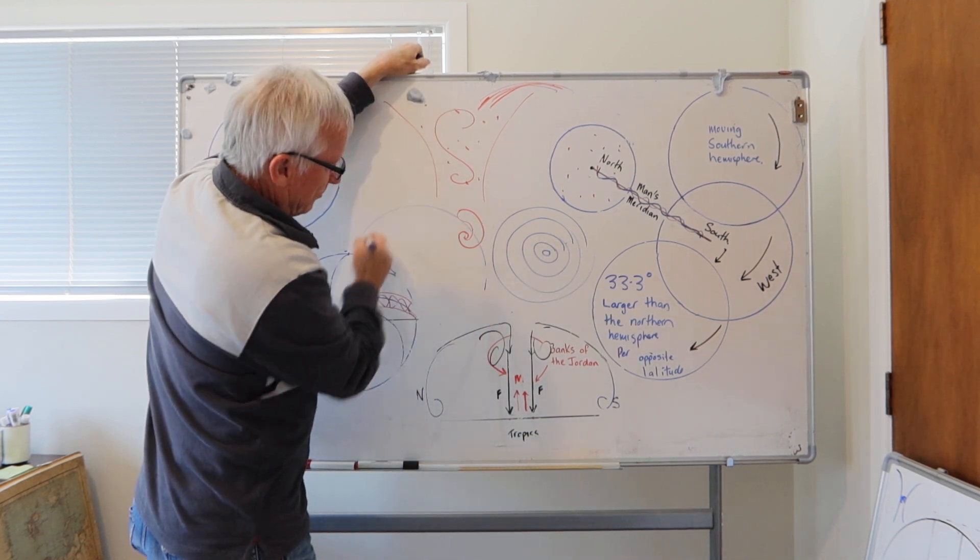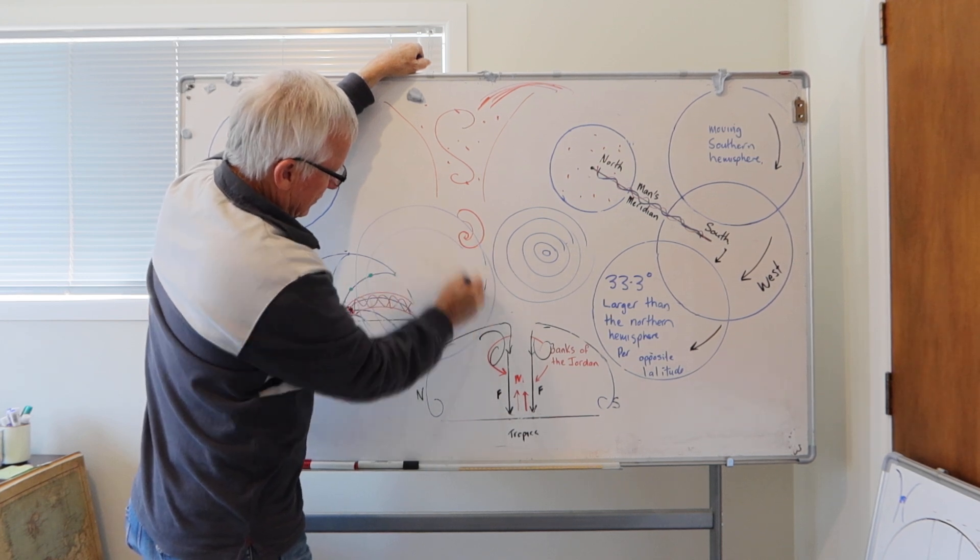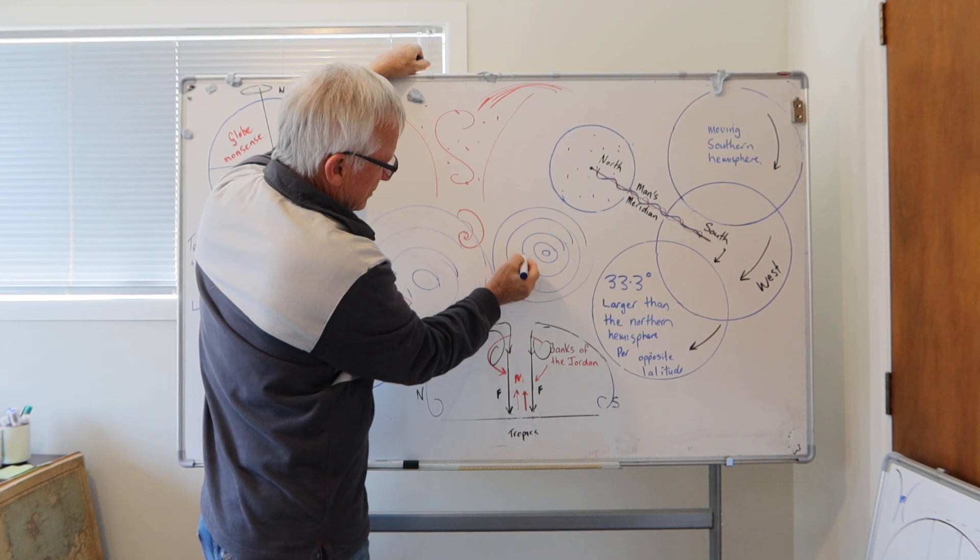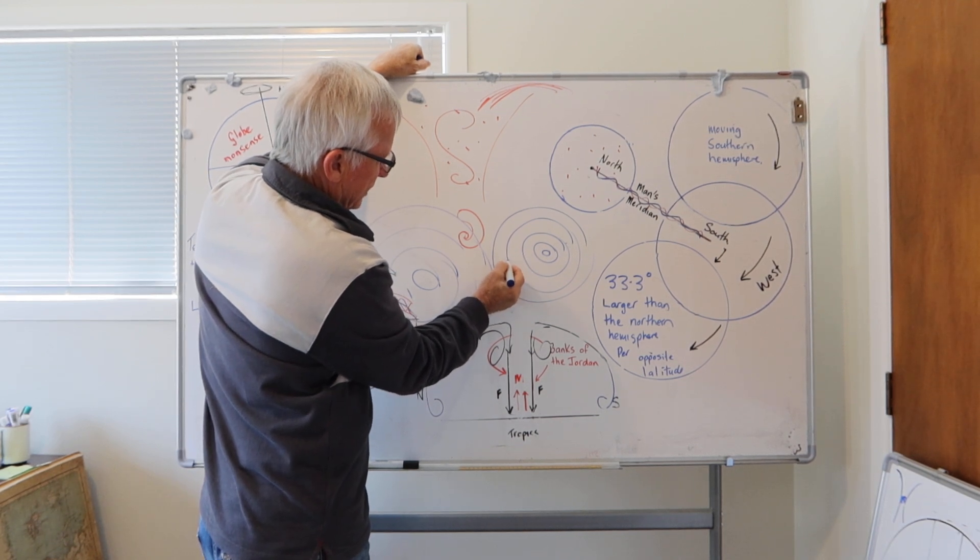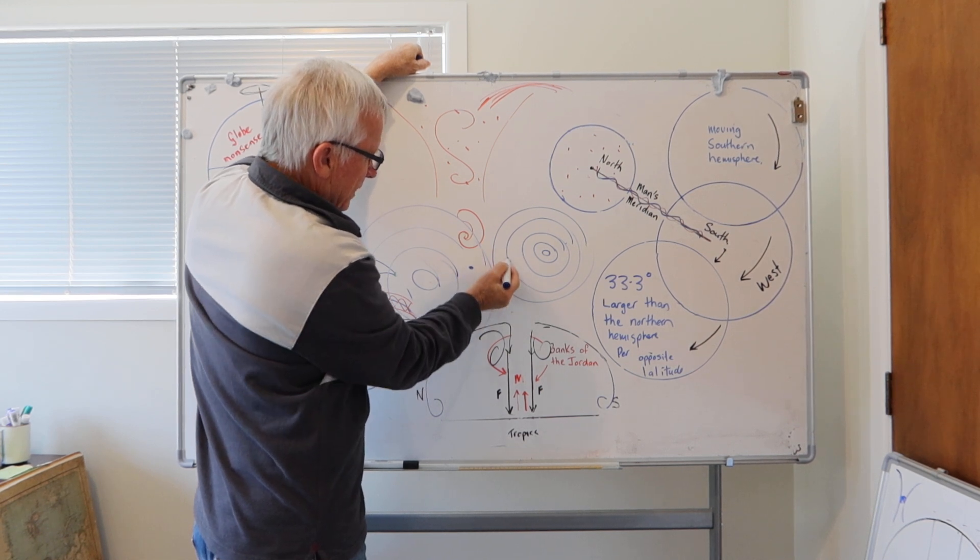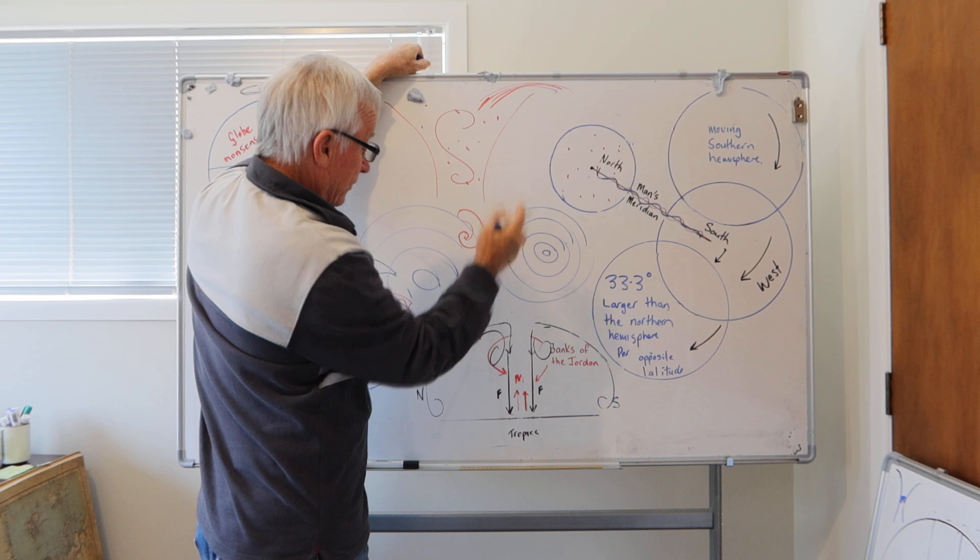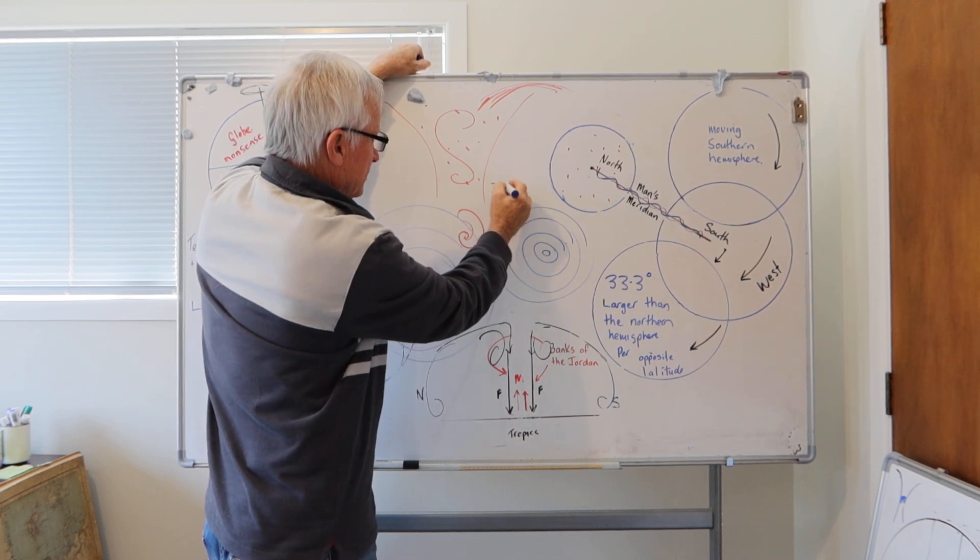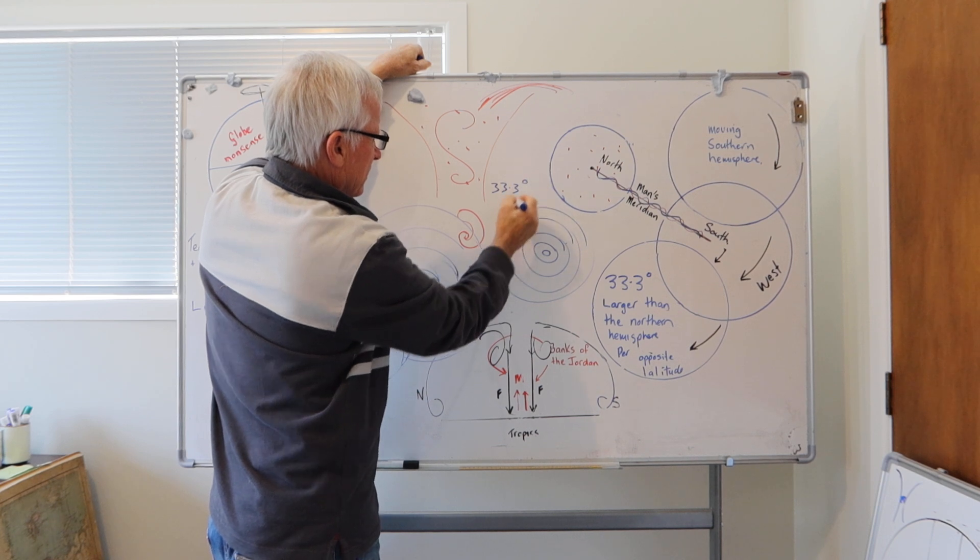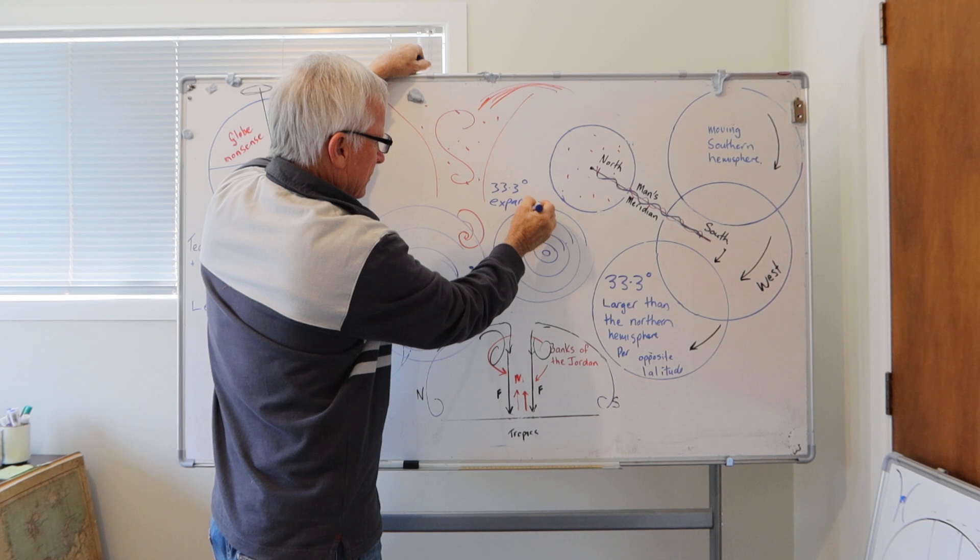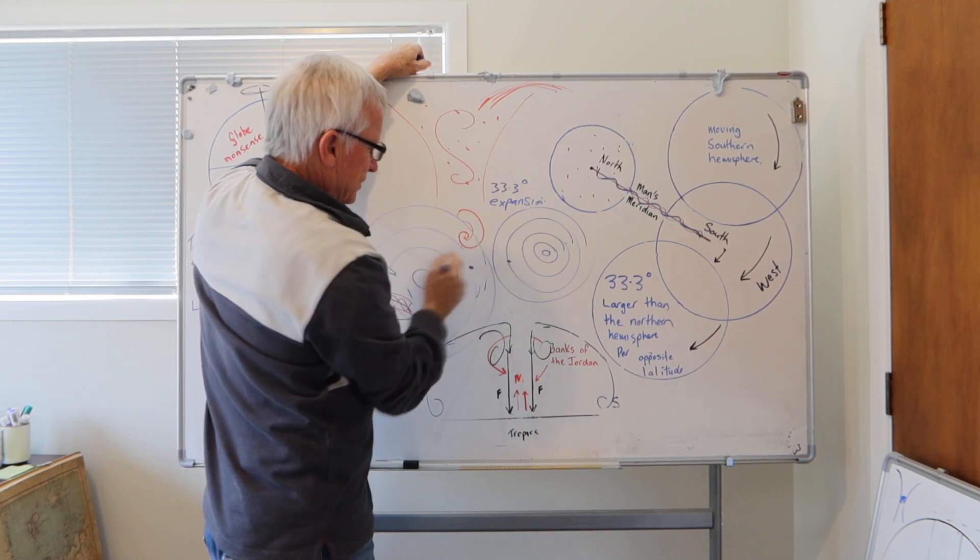Let's say this is north but then you have the bigger southern field. So let's say you're 20 degrees north, 20 degrees south. There's a 33 percent, if I've got my math right, expansion between these two.